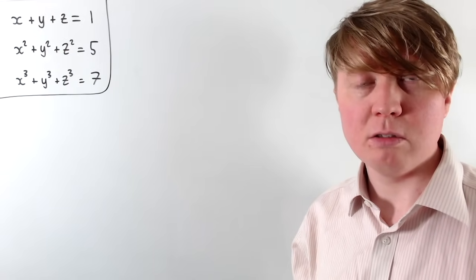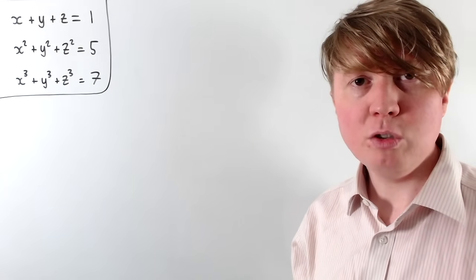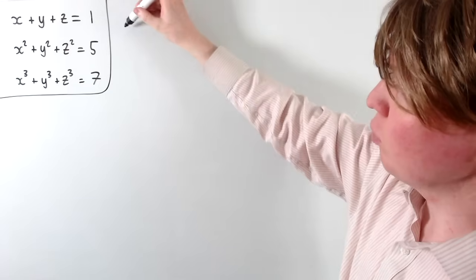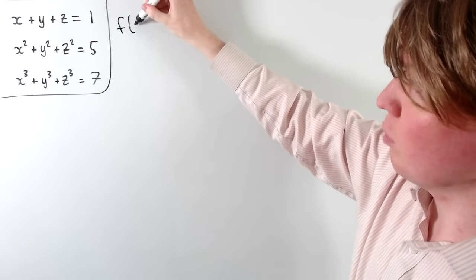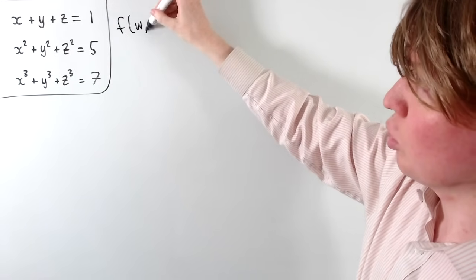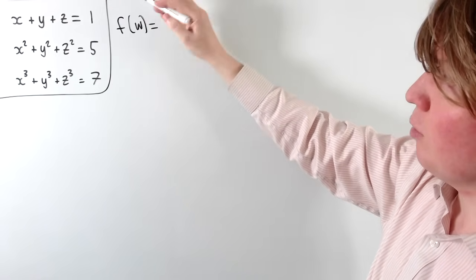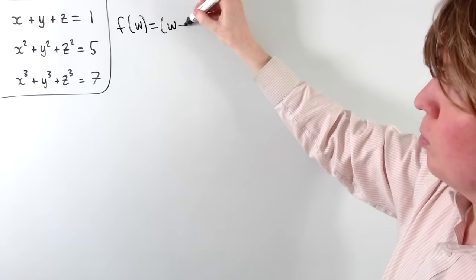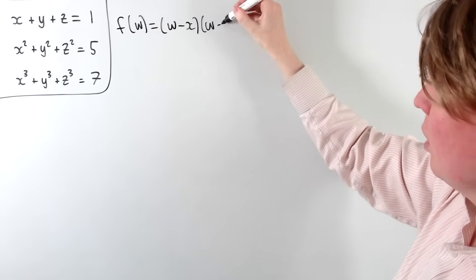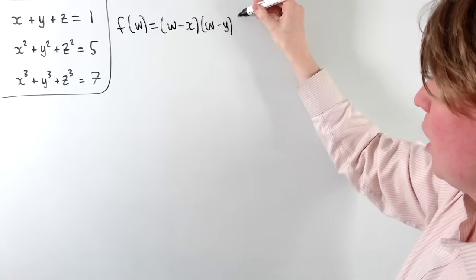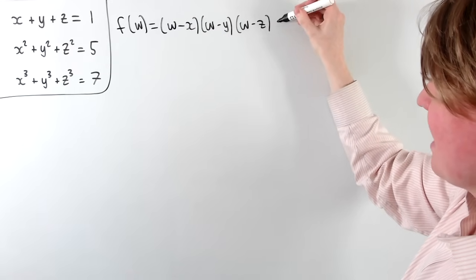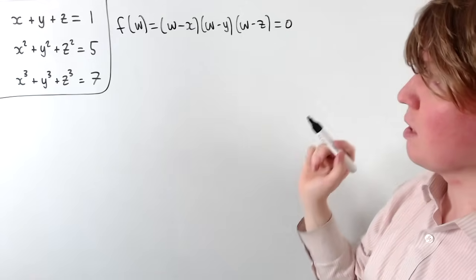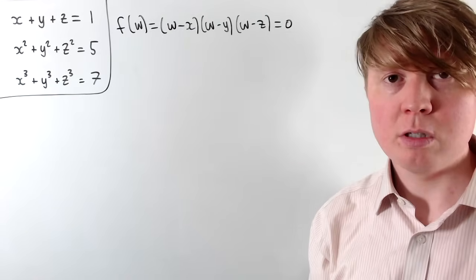So what do we mean by this? Let's imagine we have a cubic equation equal to zero in a different variable — we can call this w. If it had x, y, and z as its solutions, we'd have (w − x)(w − y)(w − z) = 0, so this cubic would have x, y, and z as its roots.